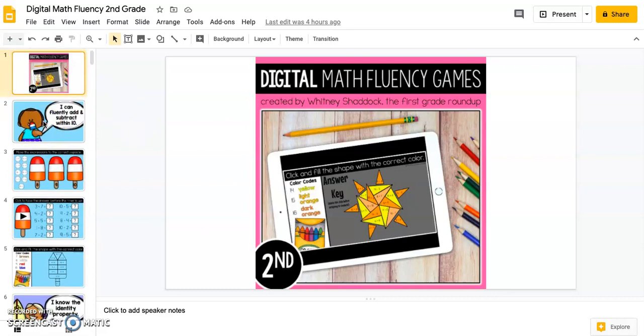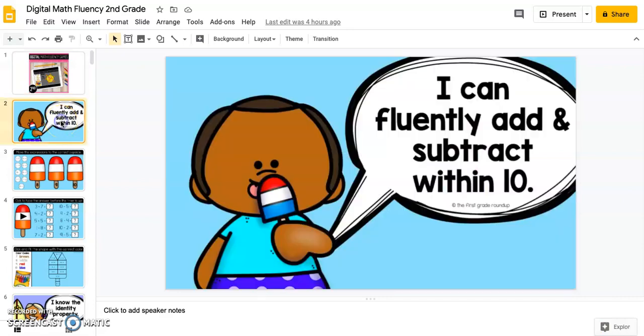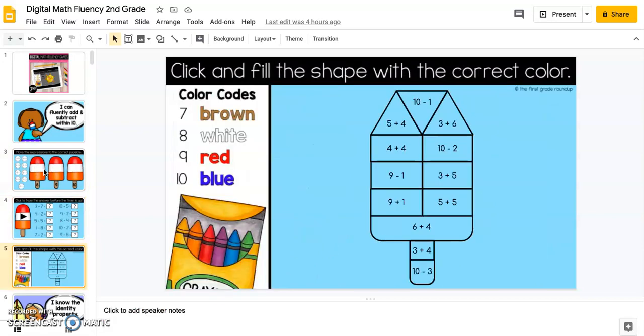It has 21 different categories and skills listed in the preview. Each category has a slide that tells you what the goal is, and then it has three games after that to support that skill.